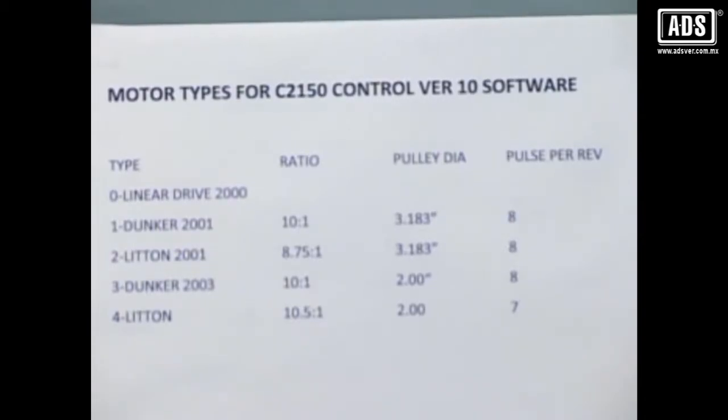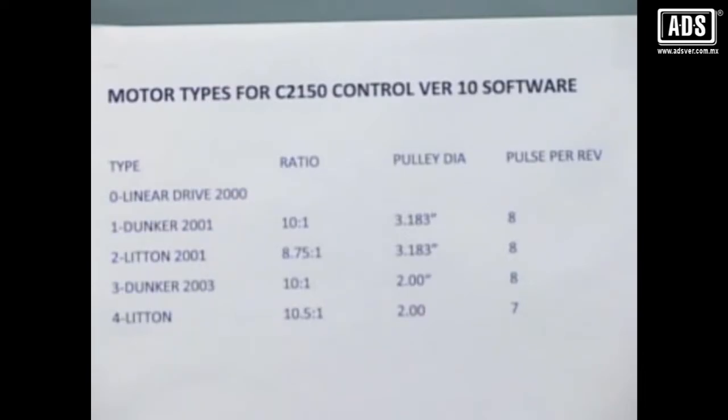Belt drive operators need to run the initialization cycle following mechanical installation. When the type is selected, the appropriate data is loaded into the factory defaults. See the type table.